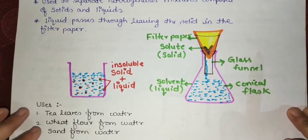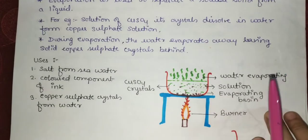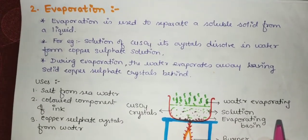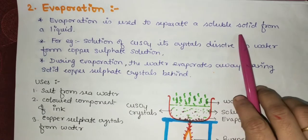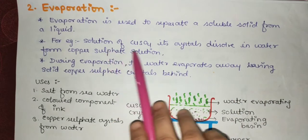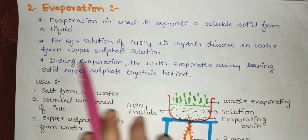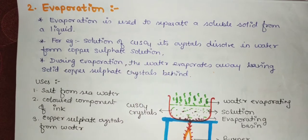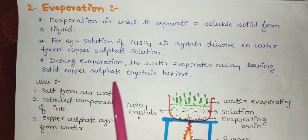Now let us discuss the next method: evaporation. Evaporation is used to separate a soluble solid from a liquid. For example, copper sulfate crystals dissolve in water to form a copper sulfate solution. During evaporation, the water evaporates away, leaving solid copper sulfate crystals behind.